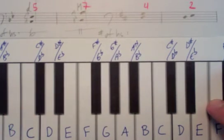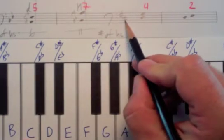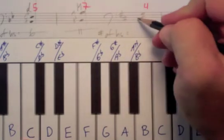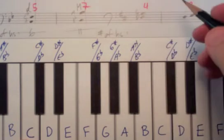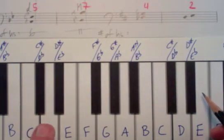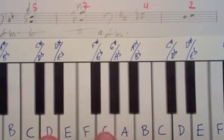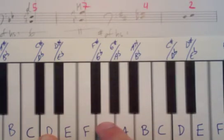Two more! Bass clef, key signature D major — F sharp and C sharp. Here we have D to G. Any old D on the keyboard, with the G above it. Count the half steps: one, two, three, four, five. It's a very common interval. Generic interval of a fourth, five half steps horizontally — a perfect fourth.